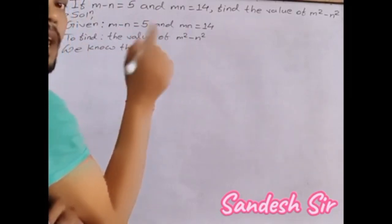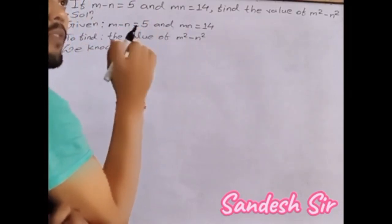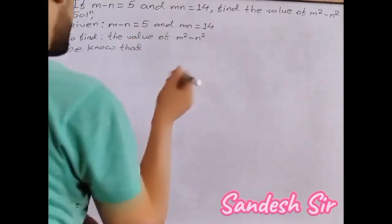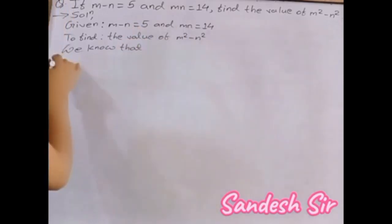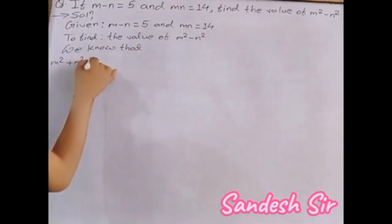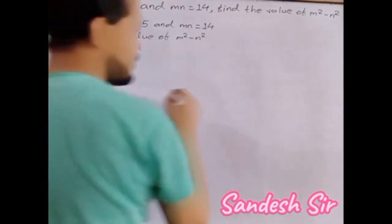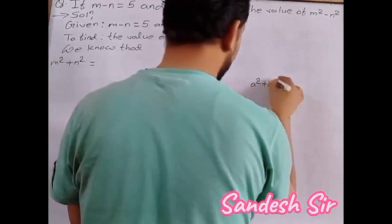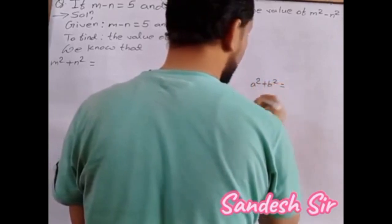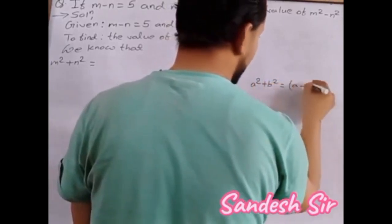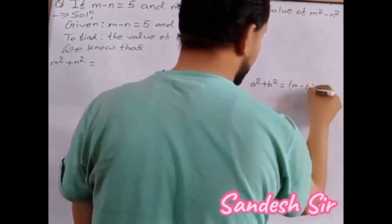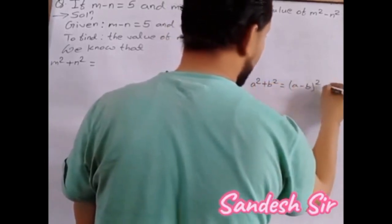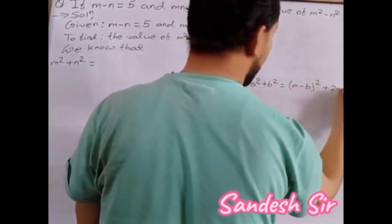First of all, I am going to find the value of m plus n. I am going to use the m squared plus n squared formula. This formula is equal to A minus B whole squared plus 2AB.